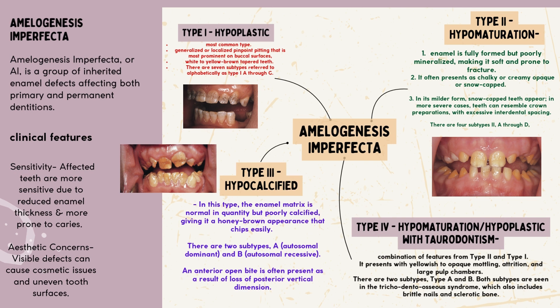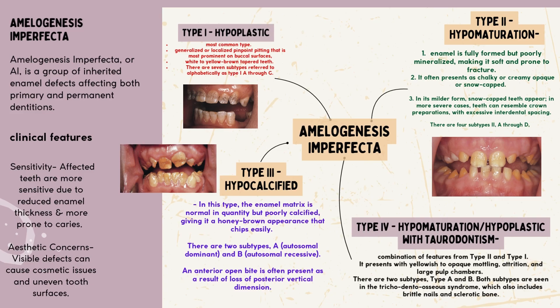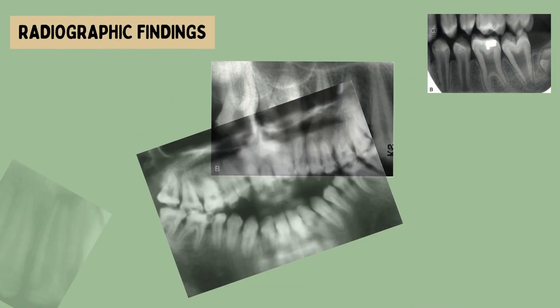An anterior open bite is often present as a result of loss of posterior vertical dimension. Type IV: hypomaturation-hypoplastic with taurodontism. This type is a combination of features from type II and type I. It presents with yellowish to opaque mottling, attrition, and large pulp chambers. There are two subtypes, type A and B. Both subtypes are seen in tricho-dento-osseous syndrome. Defects are limited to specific regions of enamel with normal root formation.